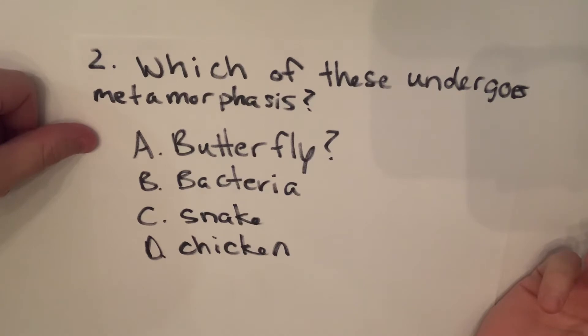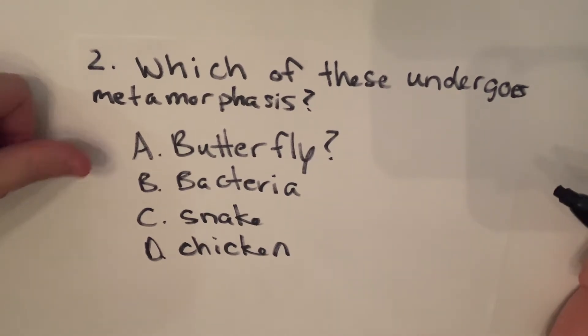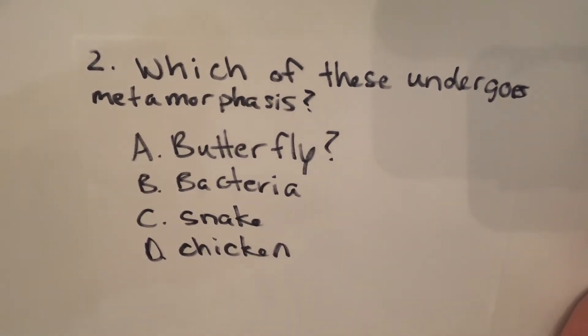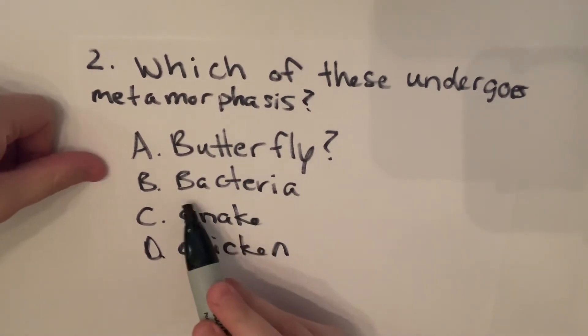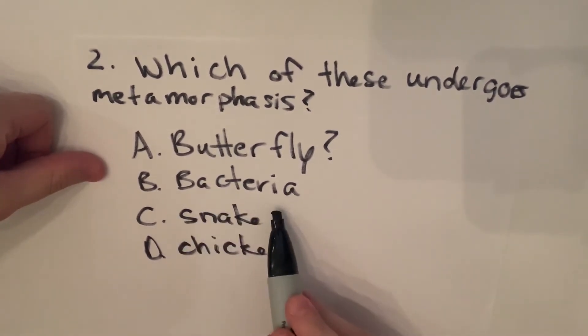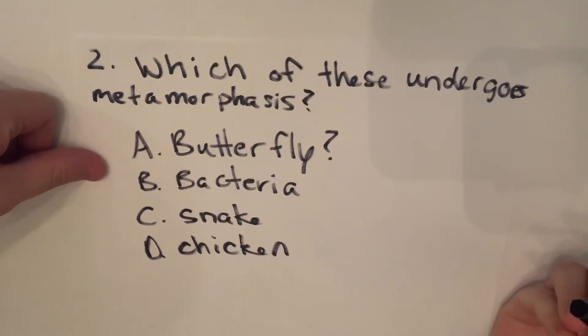say Pokemon—when they evolve they completely change form, that's a metamorphosis. A bacteria will not undergo metamorphosis; it will grow, it'll get bigger. So for example, we could use E.